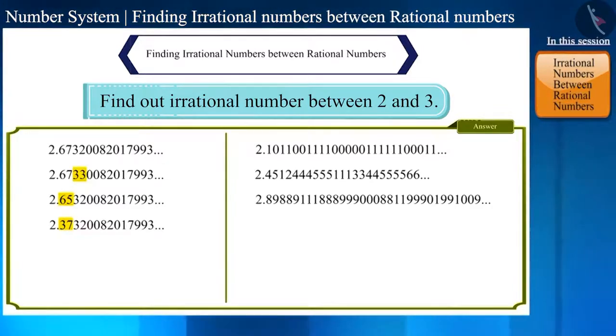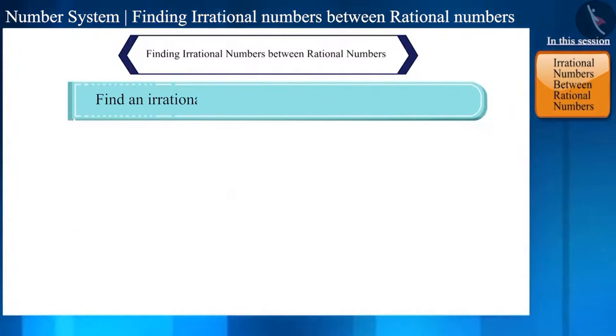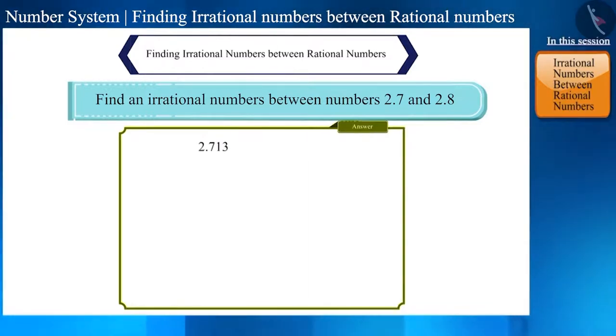The interval between 2 and 3 is very large. We can do this with even smaller intervals. For example, find an irrational number between 2.7 and 2.8. Here we can write any number after 2.7 that is neither repeated nor ends.